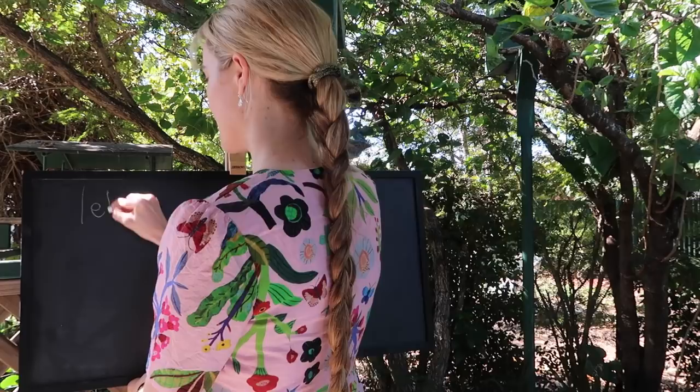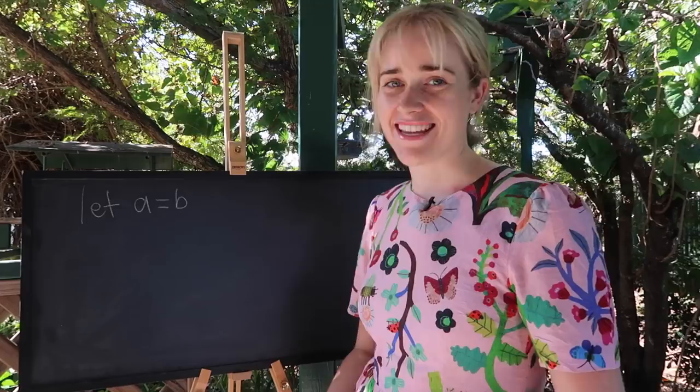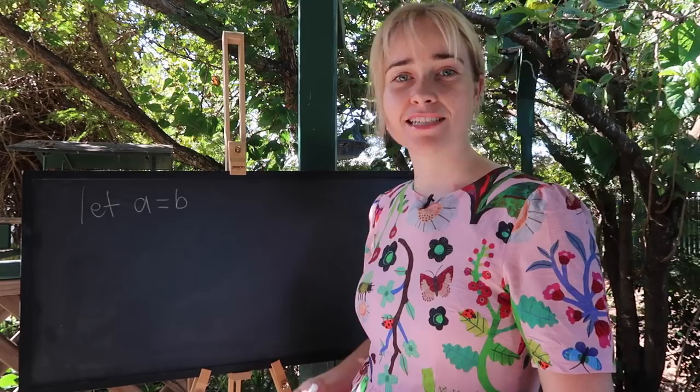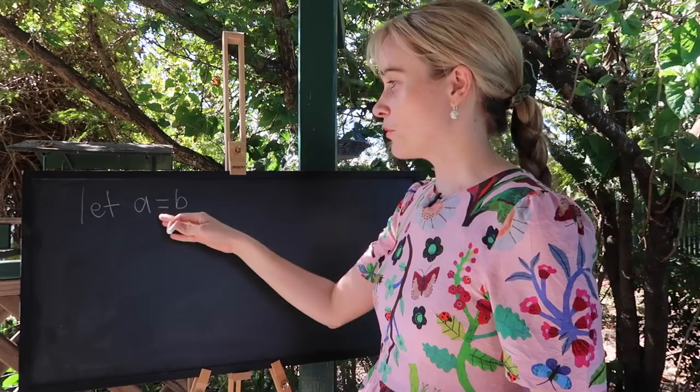The first thing that we're going to do is we're going to let A equal B. A and B are our first two characters and they are variables. They could be anything that they ever wanted to be. They have the whole world as their oyster. But today A and B have chosen to be exactly the same thing. Now as we go along, don't be afraid of the mathematics here. I'm here with you and I'm going to help you go through it.